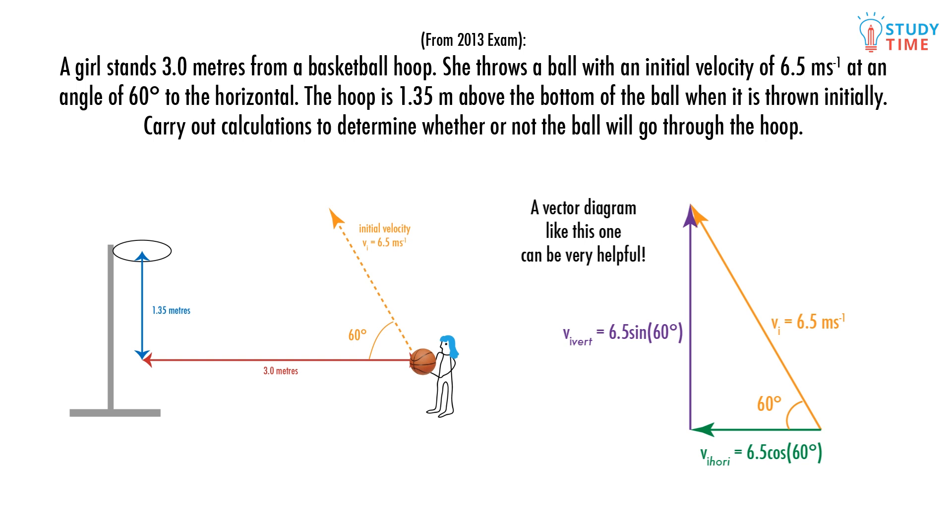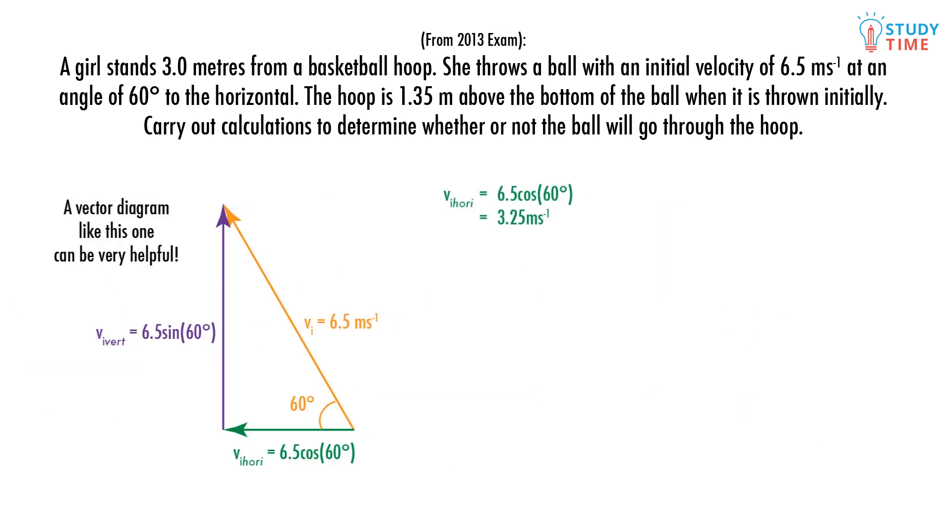Now we deal with each velocity component separately. The horizontal distance to the hoop is 3 meters and the horizontal velocity is 3.25 meters per second. So to find the time taken to get to the hoop horizontally we use V equals distance over time and rearrange it as time equals distance divided by velocity, which in this case is equal to 3 divided by 3.25 equal to 0.923 seconds.